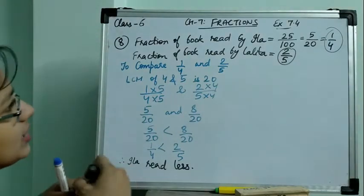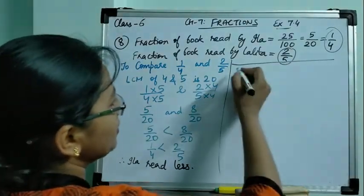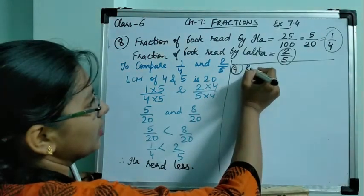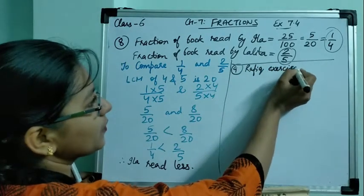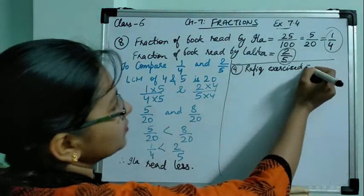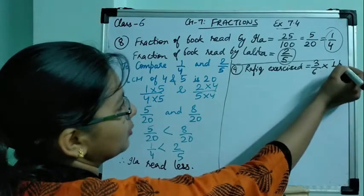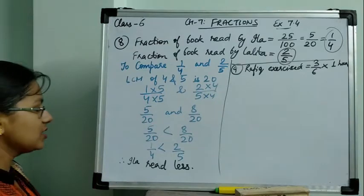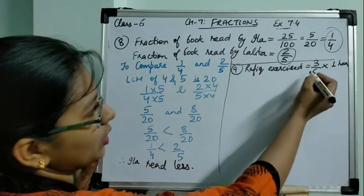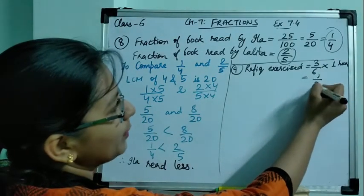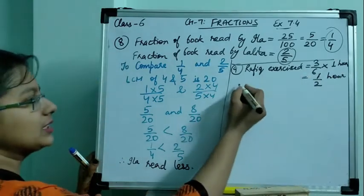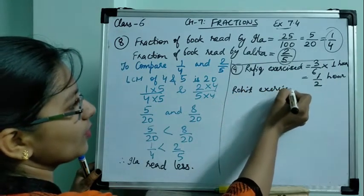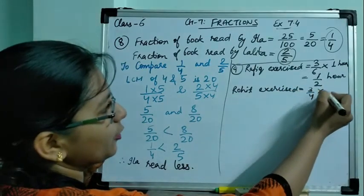Similarly, question number 9: Rafiq exercised for 3 by 6 of an hour, while Rohit exercised for 3 by 4 of an hour. The question is: who exercised for a longer time? 3 by 6 simplifies to 1 by 2 of an hour — half an hour — which is how long Rafiq exercised. Rohit exercised 3 by 4 of an hour, which cannot be simplified.